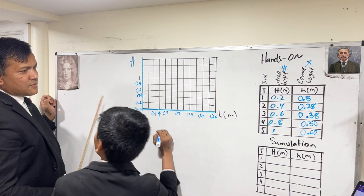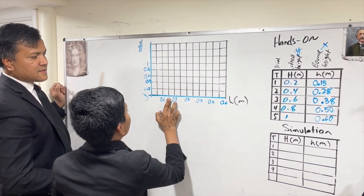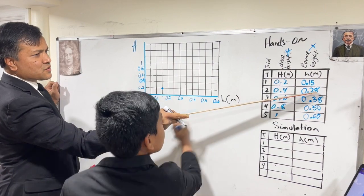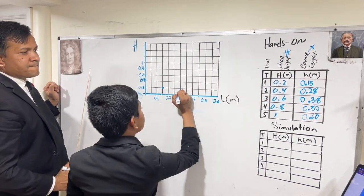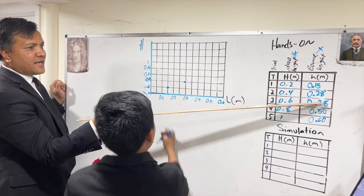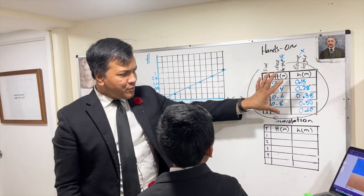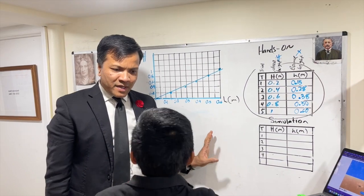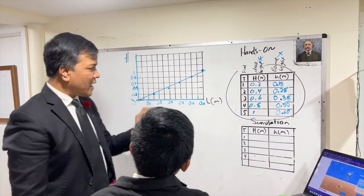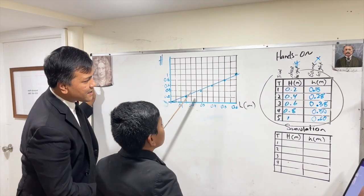So 0.15 gives us 0.2. This is good. 0.28 is close to 0.3 — that gives us 0.4. 0.38 is close to 0.4, and that also gives us 0.4. Now, if you take any point from over here and find the slope, that will make it wrong. You have to find two points from the best fit line.